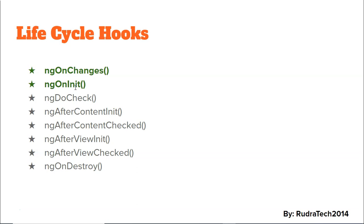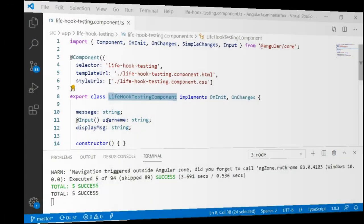Out of these eight lifecycle hooks, we will be focusing on two: ngOnChanges and ngOnInit. ngOnChanges is executed when the input property of a component or directive is updated, and it is the first lifecycle hook to be executed. ngOnInit is executed only once at the time of initialization of the component.